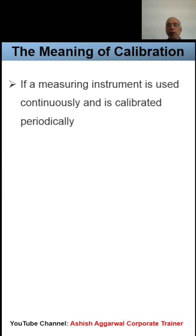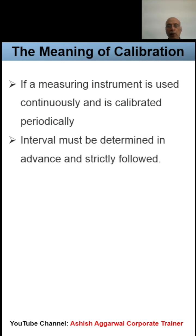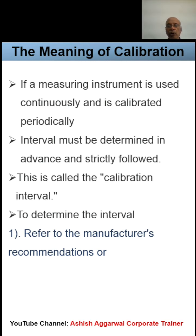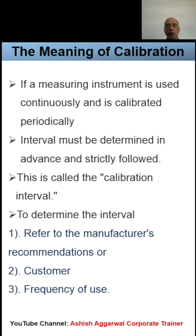When we are using the measuring instrument on a continuous basis, the instrument is required to be calibrated periodically. This period of calibration is required to be determined in advance and it must be strictly followed. This is called the calibration interval, which can be decided as per the recommendation by the instrument supplier, by the customer requirement, or by the frequency of use.